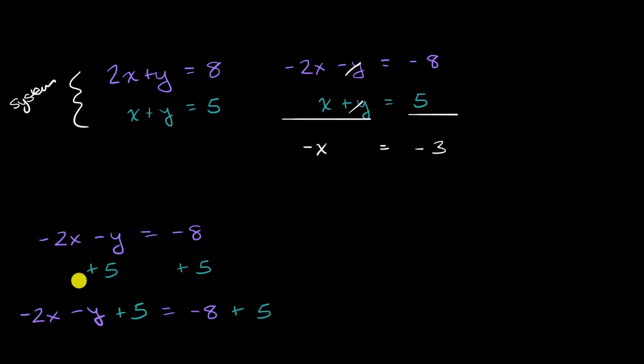Hopefully, this is a little bit intuitive, because once again, and I'm really saying the same thing over and over again, the left side is truly equal to -8, so if I add 5 to it, it's still going to be truly equal to -8 + 5.